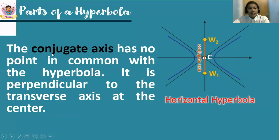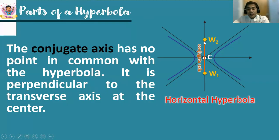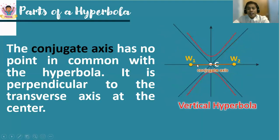The second type of axis is the conjugate axis. The conjugate axis has no common point with the hyperbola — meaning it is not part of the graph — but it is perpendicular to the transverse axis at the center. The endpoints of the conjugate axis are named w-sub-1 and w-sub-2. In a horizontal hyperbola, the conjugate axis passes through the center perpendicular to the transverse axis.